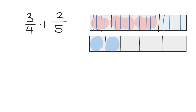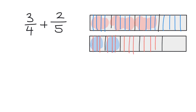Now let's do the same thing for our two-fifths. We're going to take each of these five pieces and cut them into four pieces — one, two, three, four — repeated across all five fifths.